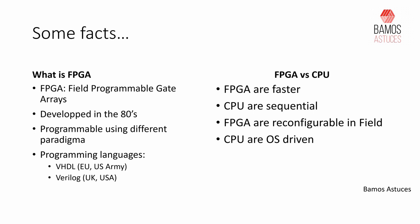FPGAs are a lot faster than CPUs. Why? Because with FPGA we can use what we call parallel computing — an FPGA can run thousands of tasks at the same time, thanks to the great amount of pins and the great amount of logical primitives it has inside.